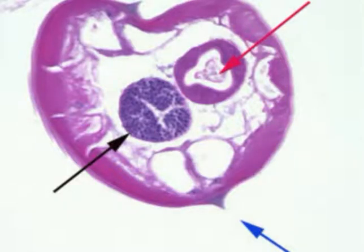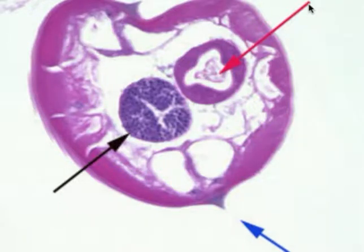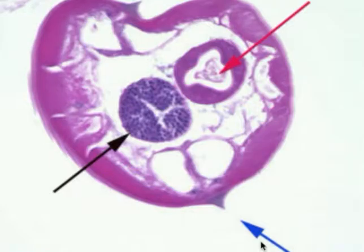Here we can see a pin worm taken from the appendix. This is a male pin worm. The black arrow is pointing to the testis and the red arrow is pointing to the worm's gut. Here with the blue arrow we can see the most distinctive feature, the alar — the little spikes on the surface — which easily identify this as a thread worm.